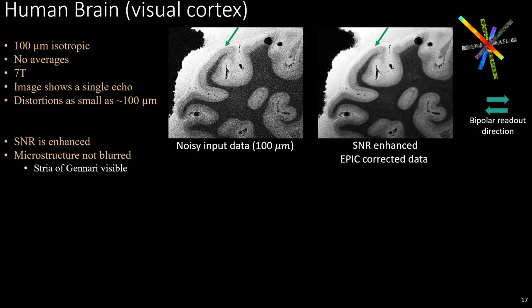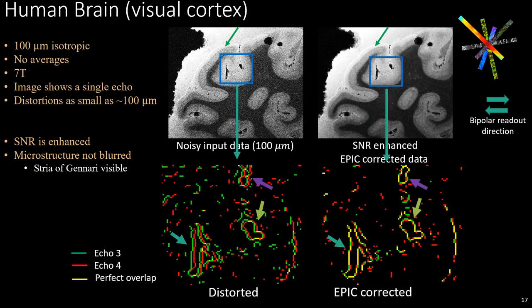Finally, we look at a single echo image of an ex vivo human visual cortex at 100 micron isotropic resolution. EPIC improves the SNR without blurring subtle microstructure such as the stria of Gennari, highlighted with the arrow. To analyze edge alignment across echoes, we visualize anatomical edges of the third and fourth echo in green and red respectively. They are separated in the distorted data but align and become yellow in the EPIC corrected data, demonstrating successful distortion correction of displacements as small as 100 microns.